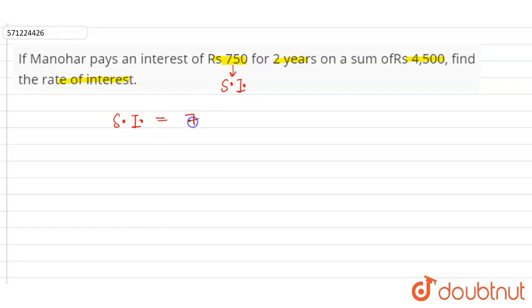Now what things are given? Simple interest is rupees 750, time is given 2 years, and rate of interest we have to calculate. Principle is given as 4500 and we have to calculate the rate of interest. So the formula for calculating the simple interest is SI = P × R × T / 100.